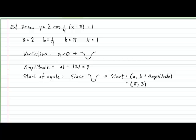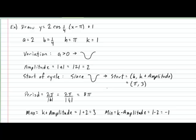The next element to identify is the period, given by the formula 2π divided by the absolute value of B. In our example, that corresponds to 2π divided by the absolute value of one quarter, which gives a period of 8π. That means when we draw the cycle, it will be 8π radians long. Finally, the maximum corresponds to K plus the amplitude, which equals 3, and the minimum is K subtract the amplitude, which produces a minimum of negative 1.